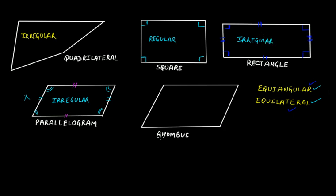This is a rhombus. In a rhombus all the sides are equal to each other and the opposite sides are parallel to each other. So it is equilateral, but all the internal angles are not equal to each other, therefore it is not equiangular, and therefore it is an irregular polygon.